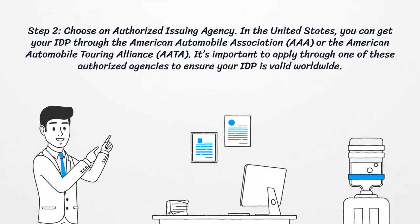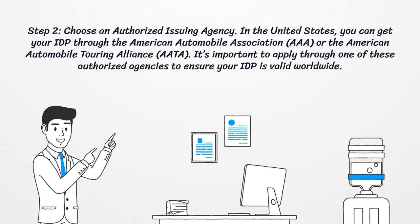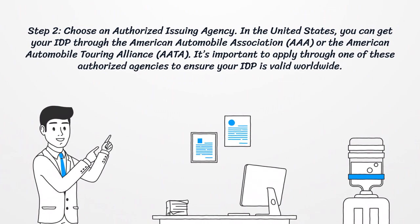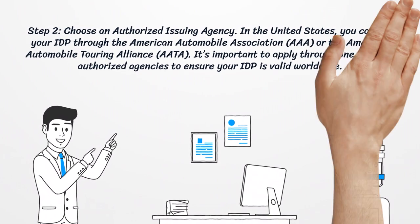Step 2: Choose an authorized issuing agency. In the United States, you can get your IDP through the American Automobile Association or the American Automobile Touring Alliance. It's important to apply through one of these authorized agencies to ensure your IDP is valid worldwide.